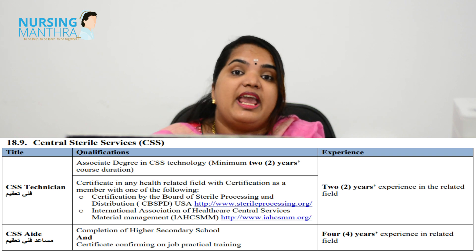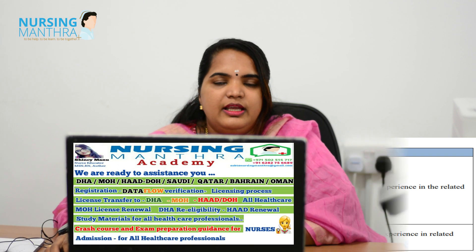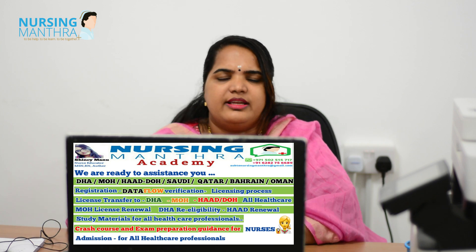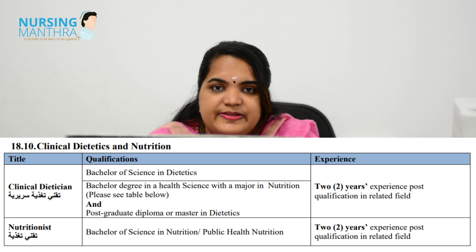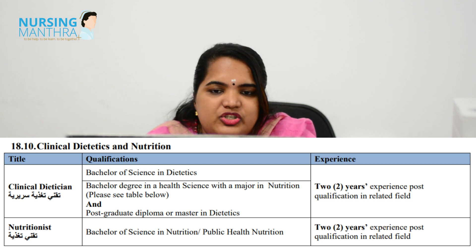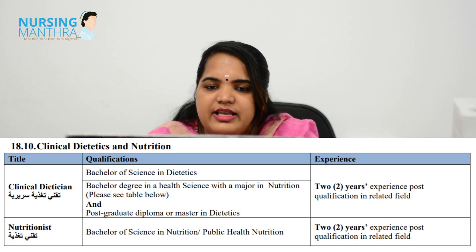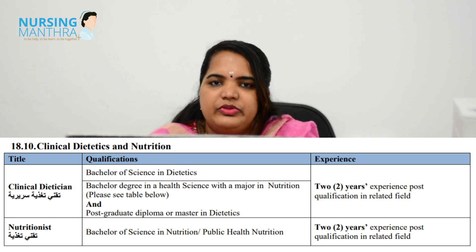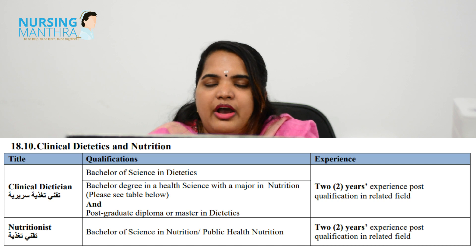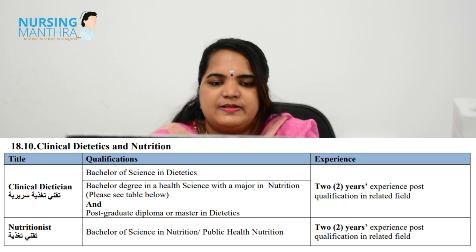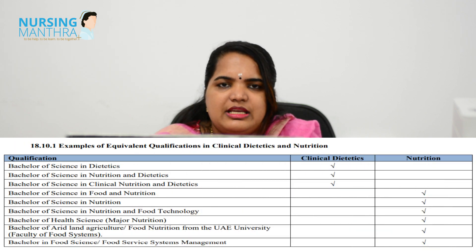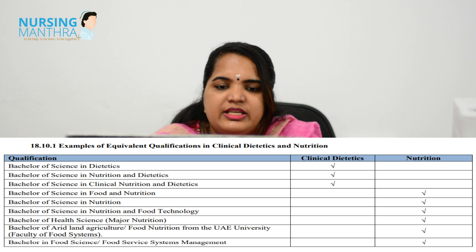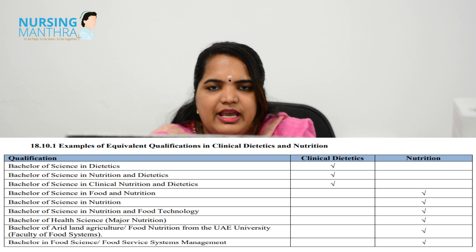Another department is Clinical Dietetics and Nutrition, with two categories: Clinical Dietitian and Nutritionist. For Clinical Dietitian, candidates who completed BSc in Dietetics, BSc in Health Science with a nutrition major, a Postgraduate Diploma, or a Master's degree in Dietetics can apply. They should have 2 years of experience after certification. BSc in Dietetics, BSc in Nutrition and Dietetics, and BSc in Clinical Nutrition and Dietetics all qualify for the Clinical Dietitian category.